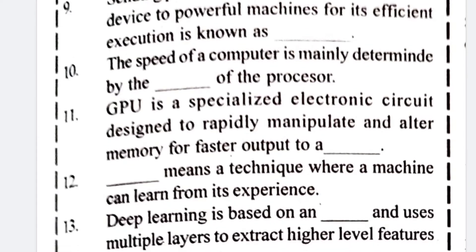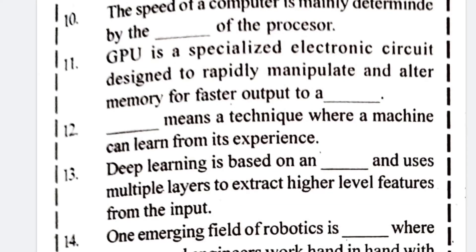Number ten: the speed of a computer is mainly determined by the processing cycle of the processor. Number eleven: GPU is a specialized electronic circuit designed to rapidly manipulate and alter memory for faster visual output to a monitor.